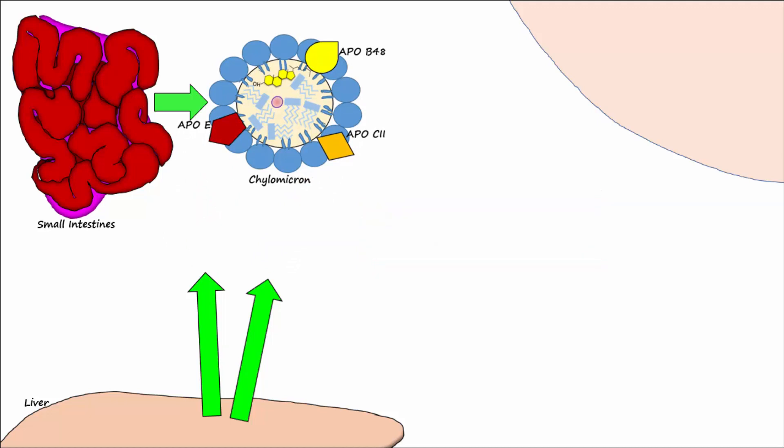On the surface of many body cells, and especially skeletal myocytes and adipocytes, there are enzymes known as lipoprotein lipase, or LPL. ApoC2 on the chylomicron allows the chylomicron to recognize LPL and bind to it.